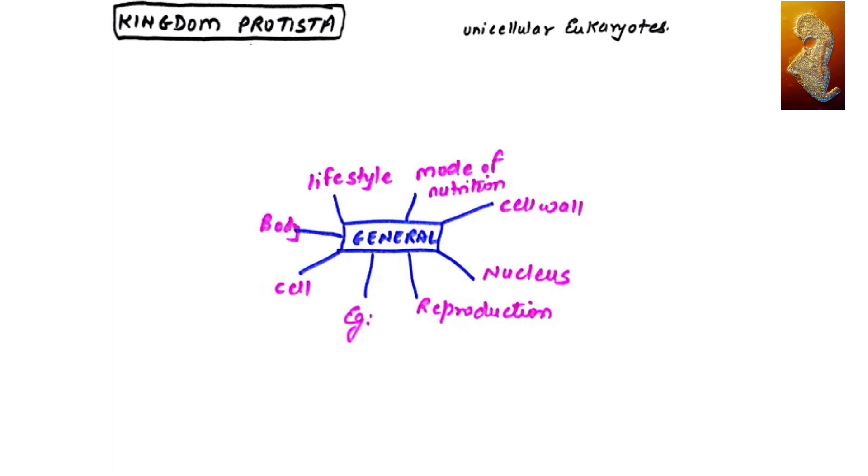This is the fourth video of Living World. When we talk about Kingdom Protista, logically it includes all the unicellular eukaryotes. When we use the word eukaryote, it means that they have a well-developed and well-defined nucleus.